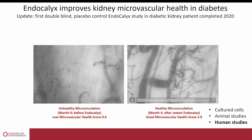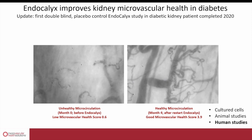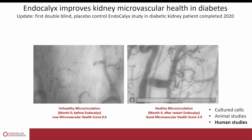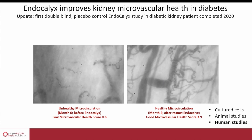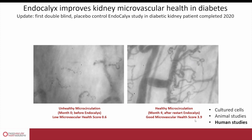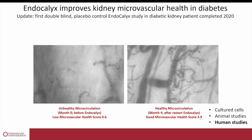On the right-hand side, the same individual after taking Endocalyx for about four months shows a significant increase in the number of capillaries, much more improved blood flow, and restored glycocalyx health, ending up in a significant improvement of their microvascular health score from 0.6 up to 3.9.